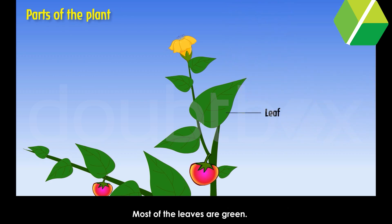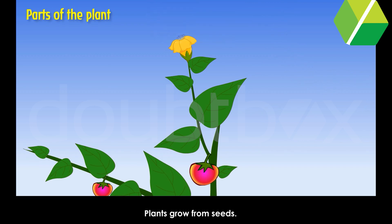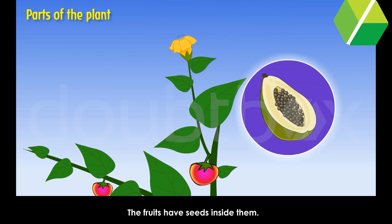Most of the leaves are green. They have different sizes and shapes. Flowers of the plants are pretty and have a sweet scent. Plants grow from seeds, and the fruits have seeds inside them.